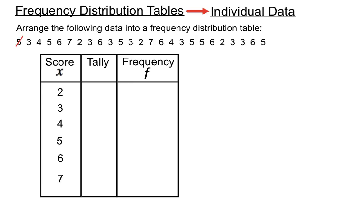So we'll cross out that 5 and put a mark down on the 5 in the tally column. We'll cross off the 3, put a mark down in the tally column for the 3. We'll cross off the 4. We'll just keep going with that. Cross off the 5 again.